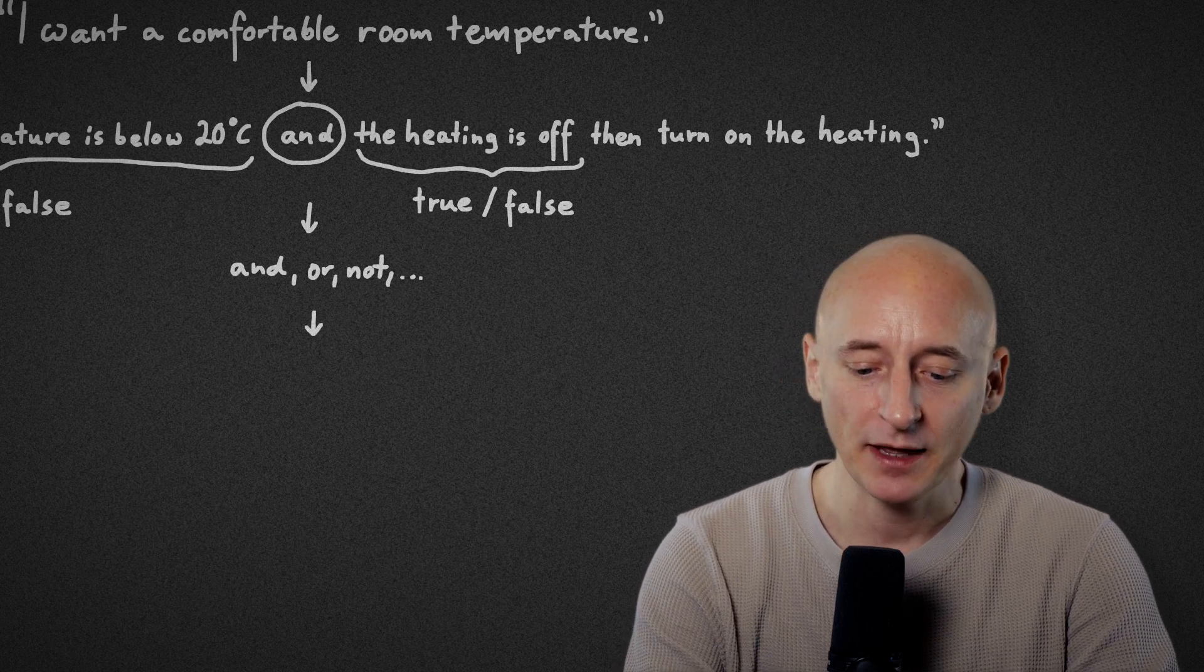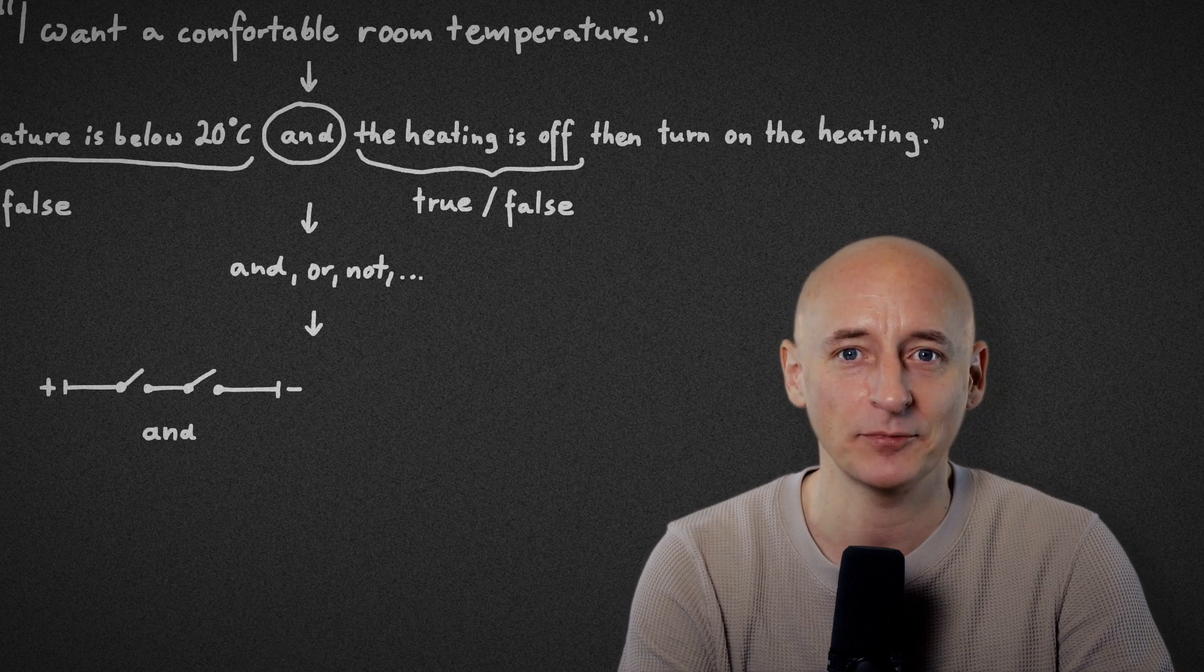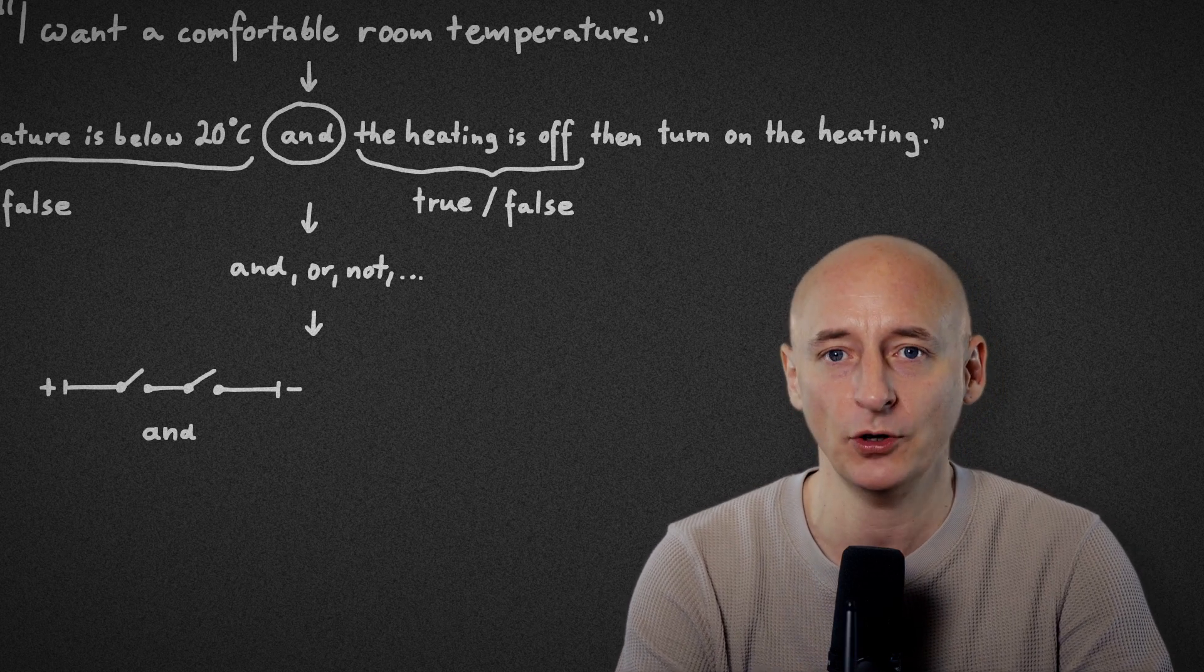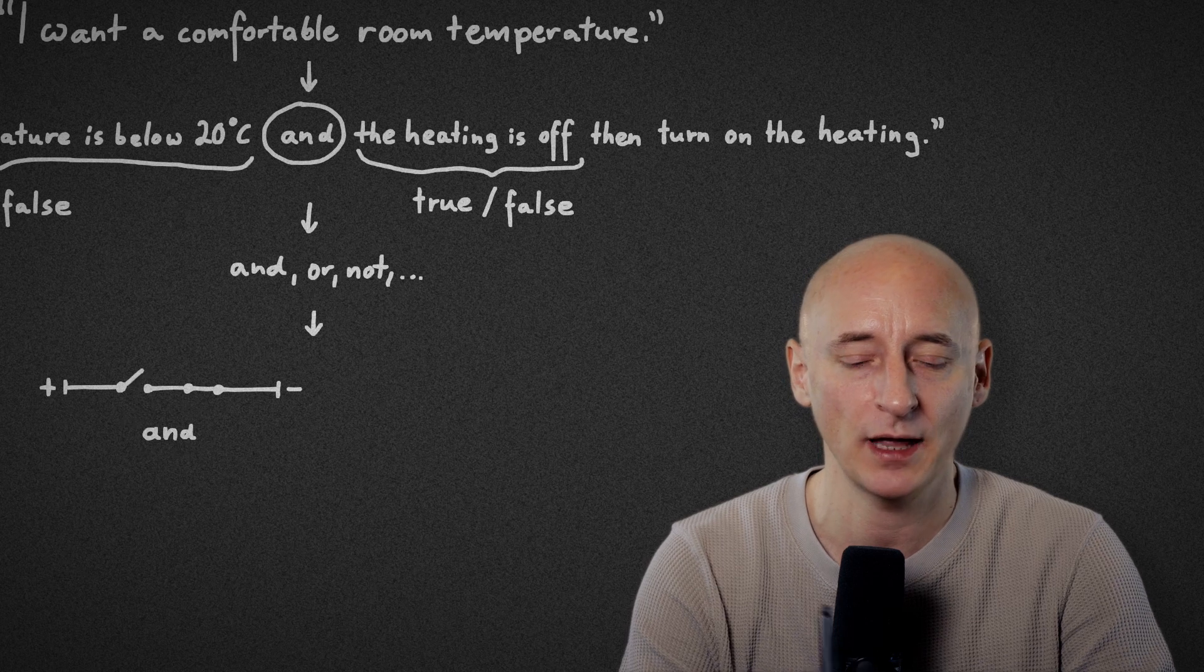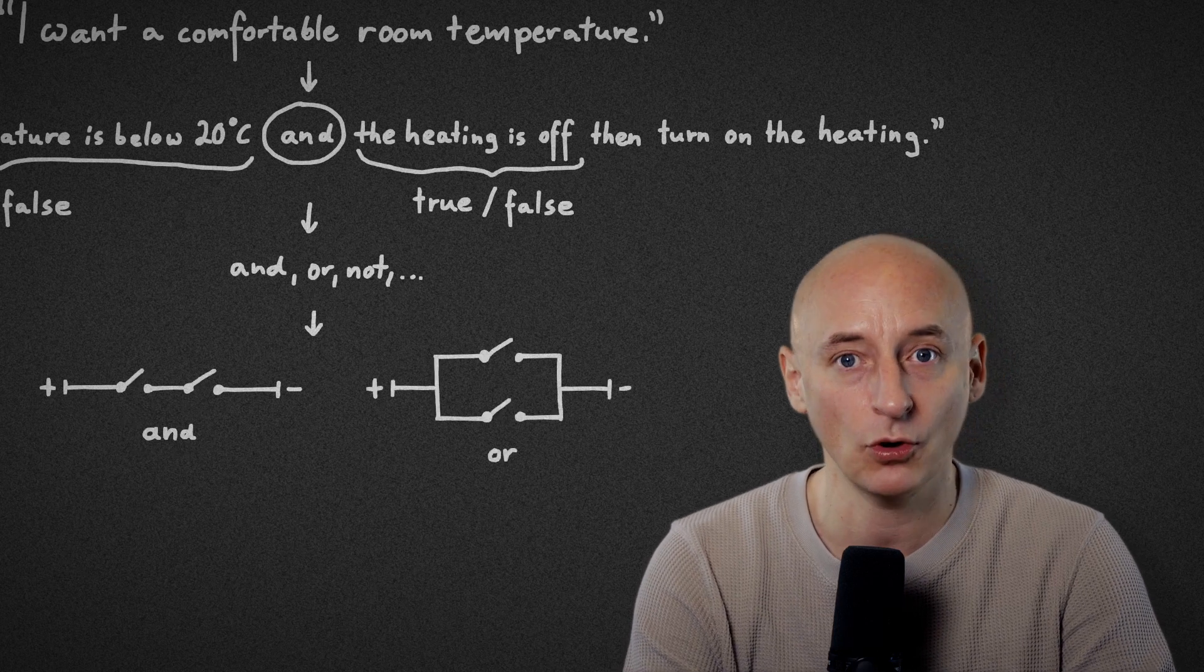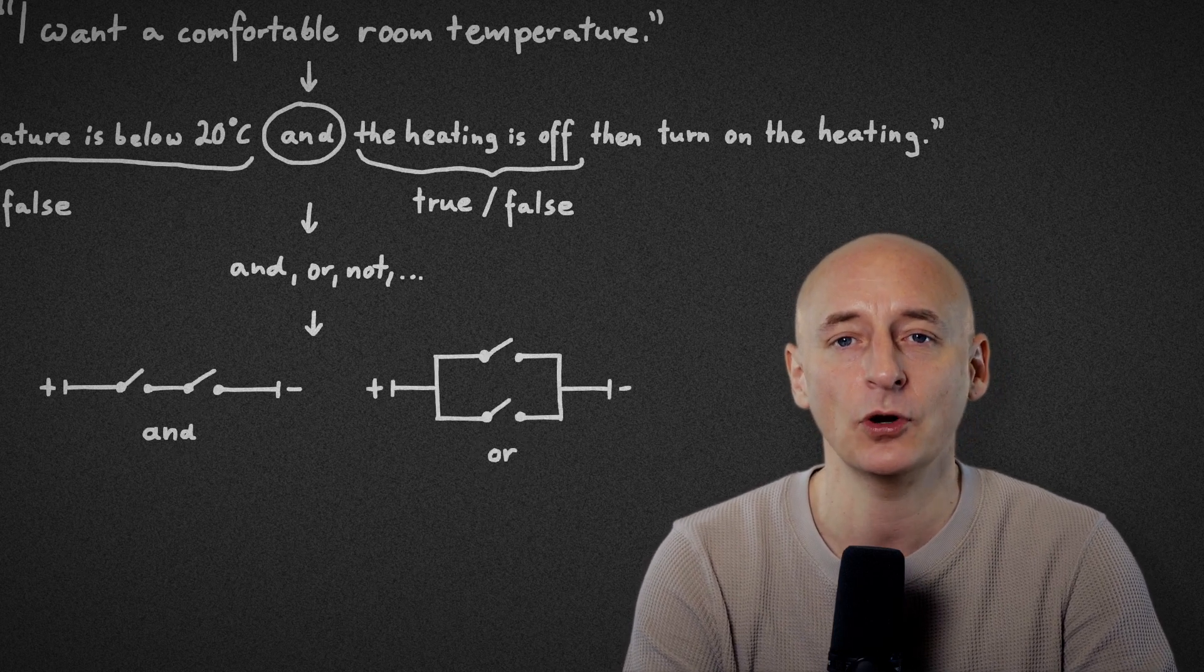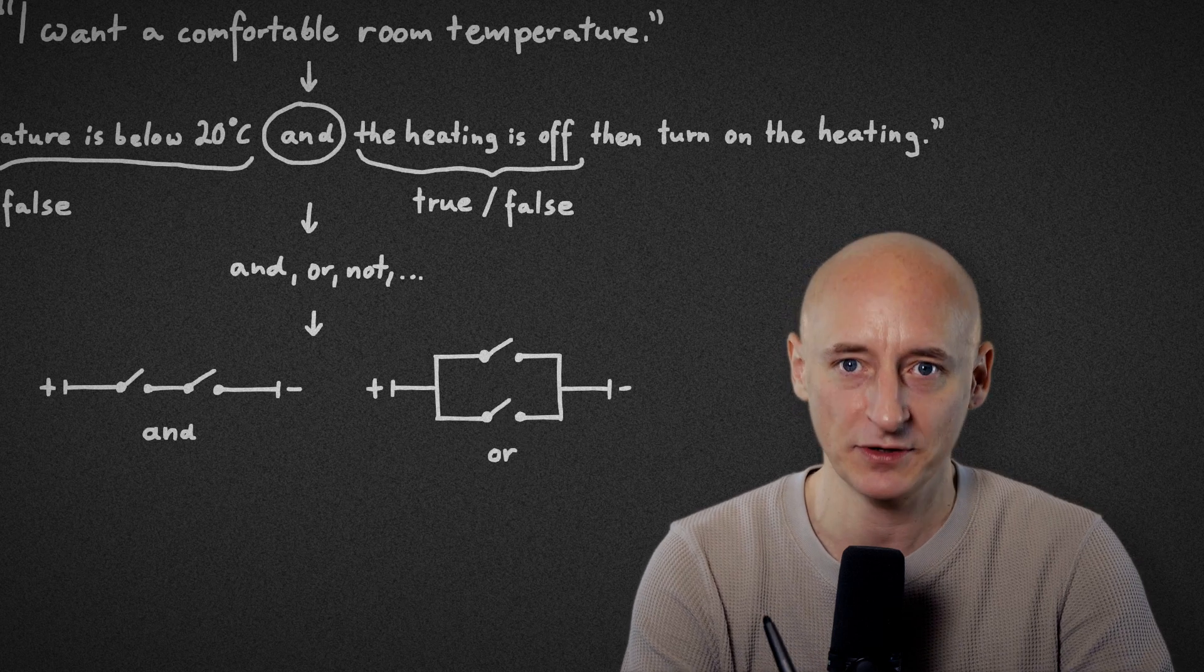For example, this circuit represents our operator AND. Electricity can only flow if both switches are ON. That one stands for OR. Electricity can flow as soon as at least one of them is ON.